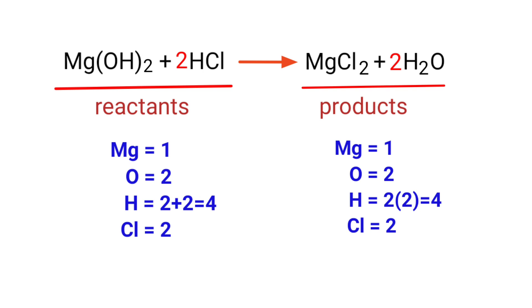The equation is now balanced. There are one Magnesium atom, two Oxygen atoms, four Hydrogen atoms, and two Chlorine atoms on both sides.